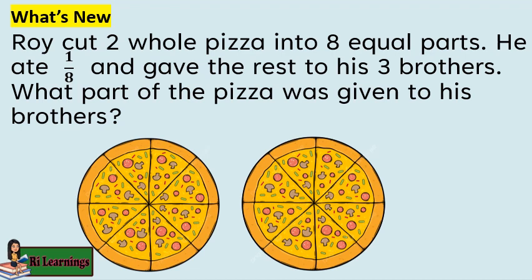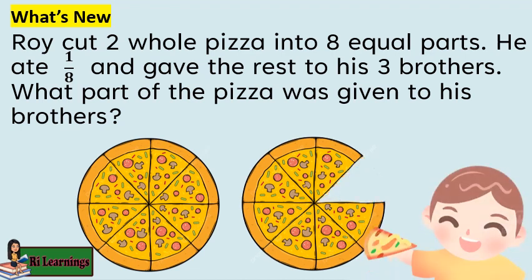Let's start our lesson with this story problem. Roy cut 2 whole pizza into 8 equal parts. He ate 1 eighth and gave the rest to his 3 brothers. What part of the pizza was given to his brothers?